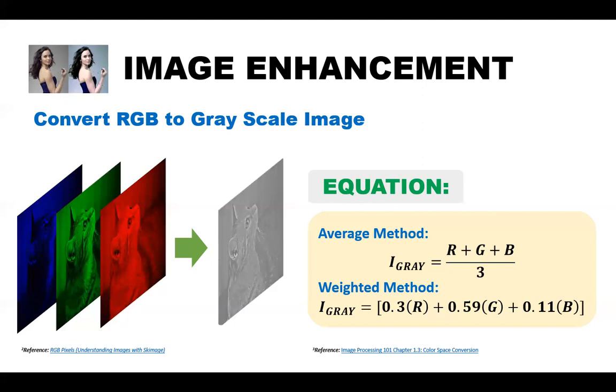The reason why we have the weighted method is because the human eyeballs react differently to red, green, and blue lights. Eyes are more sensitive to green light, less sensitive to red light, and least sensitive to blue light. Therefore, the three colors should have different weights in the distribution. The green light will be multiplied to 0.59, less sensitive to red with 0.3, and least sensitive blue with 0.11. The weighted method is also called the luminosity method and weighs the red, green, and blue accordingly to its wavelength.